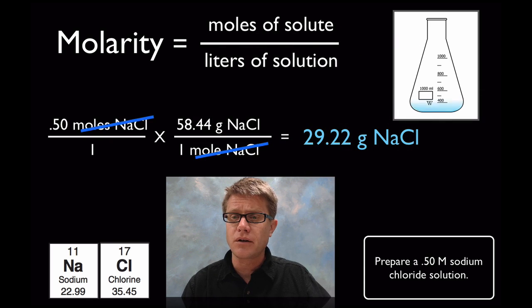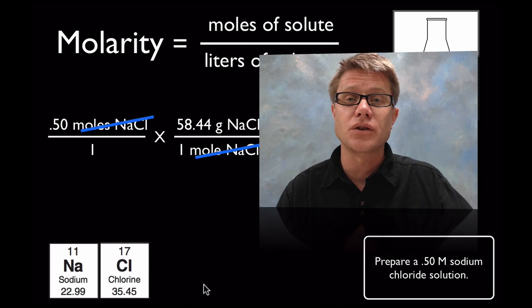So what would we do in an Erlenmeyer flask? We could add a certain amount of water. Then we're going to add our salt to it. We're going to make sure it dissolves, and then we're going to bring that volume up to 1 liter to make that 0.5 molar sodium chloride solution.